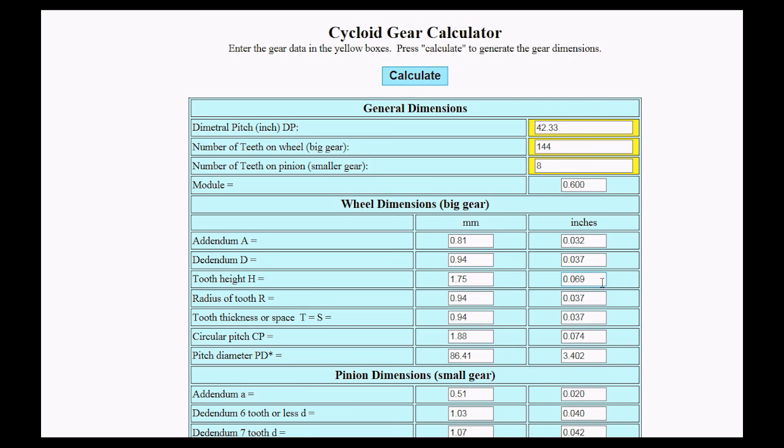Now what I found from my orrery, which was a module of 1, which means that the teeth were quite a bit larger than these, was that these numbers were fine, and you could just use them when you're cutting the teeth. But as I started to experiment with some gears for the clock, I found that these were close, but they weren't exactly right. They weren't giving me the full tooth depth.